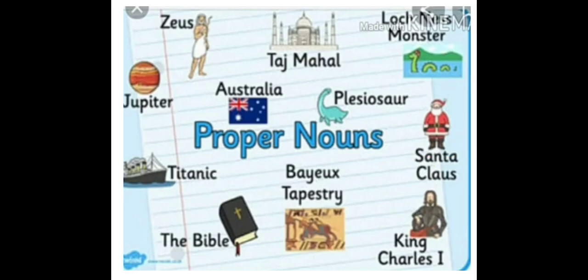Proper noun means special names. Some proper nouns are here. You can see Jesus, Taj Mahal, Jupiter, Australia, Plesiosaurus, Santa Claus, Bayeux Tapestry, The Bible, King Charles I, Titanic. These are some special names.